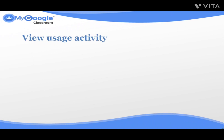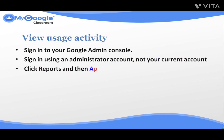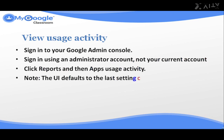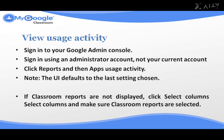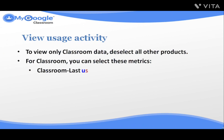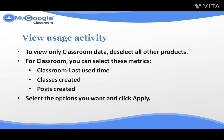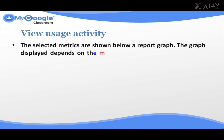Click into Google Admin Console — sign in using an administrator account, not your current account. Click Report and then Apps Usage Activity. Note the UI defaults to the last setting chosen. If classroom reports are not displayed, click Select Columns and make sure Classroom reports are selected. To view only classroom data, deselect all other products. For Classroom, you can select these metrics: Classroom Last Used Time, Classes Created, Post Created. Select the option you want and click Apply. The selected metrics are shown below the report graphs — the graphs displayed depend on the metrics you selected.